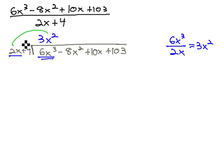We will now distribute the 3x squared onto both terms of the divisor. 3x squared times 2x is 6x cubed. 3x squared times 4 is positive 12x squared.